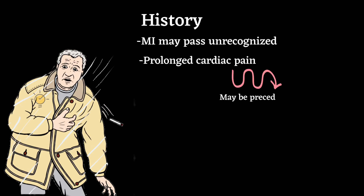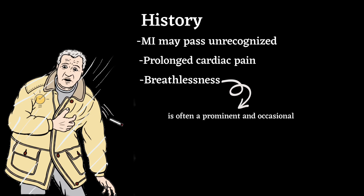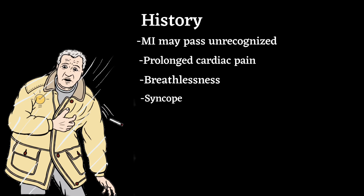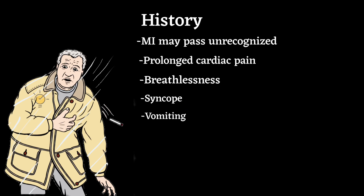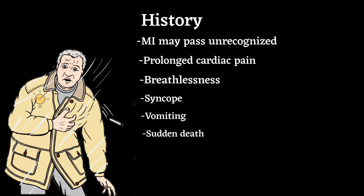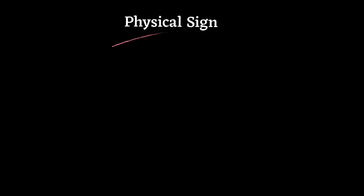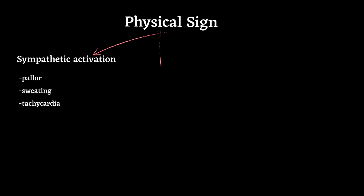The pain of MI may be preceded by a period of stable or unstable angina, but may also occur de novo. Breathlessness is often a prominent and occasionally dominant feature of MI. If syncope occurs, it is usually due to an arrhythmia or profound hypotension. Vomiting and sinus bradycardia are often due to vagal stimulation and are particularly common in patients with inferior MI.